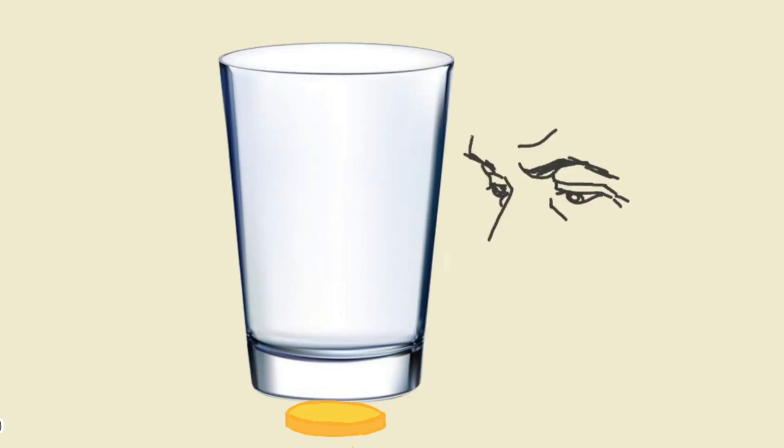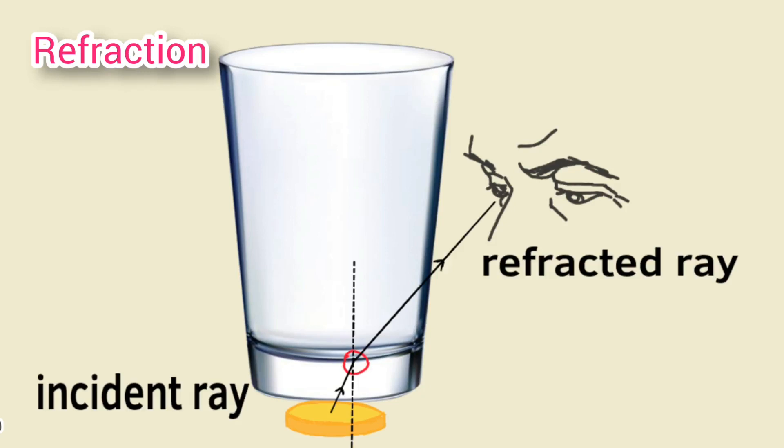Observe the coin from the sides of the glass tumbler. We can see the coin because the rays of light get refracted while passing from glass to air and reach our eye.